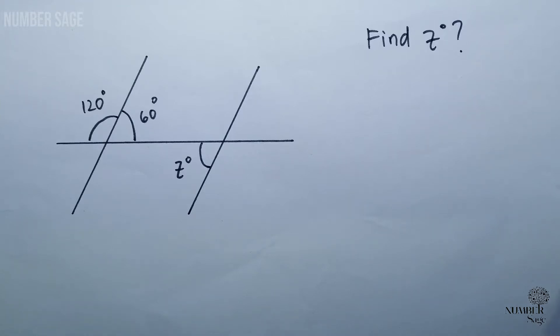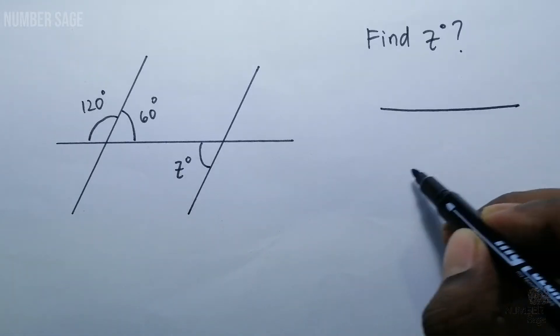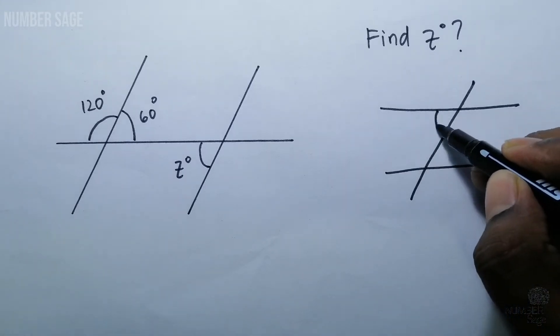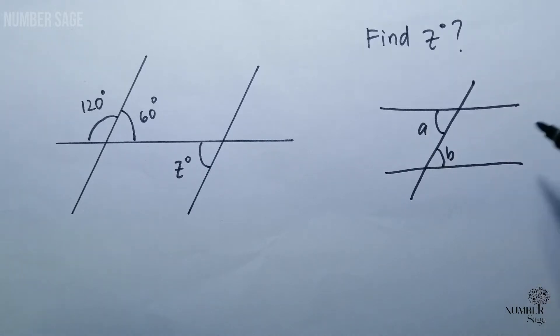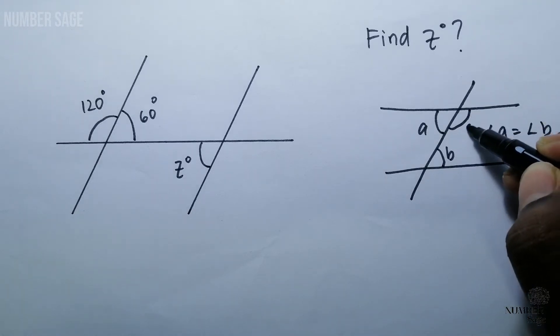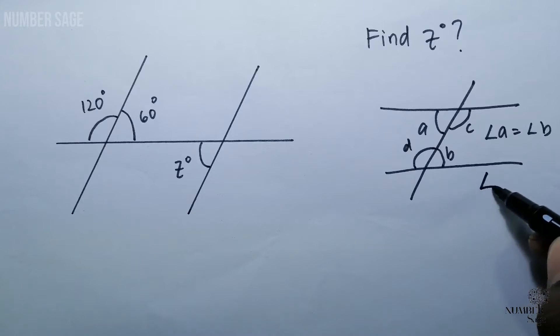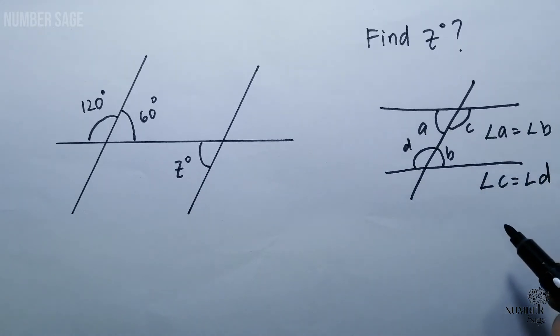We can use the alternate angle concept to solve this question. How does the alternate angle concept work? When there's two parallel lines and one intersecting line, this angle is alternate to this angle. So angle a will be equals to angle b. Similarly, c will be equals to d.